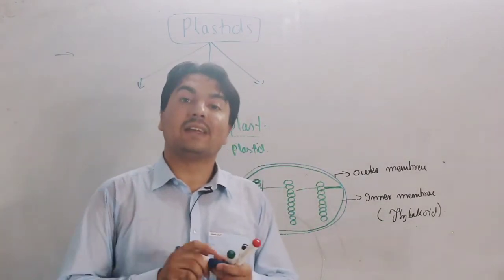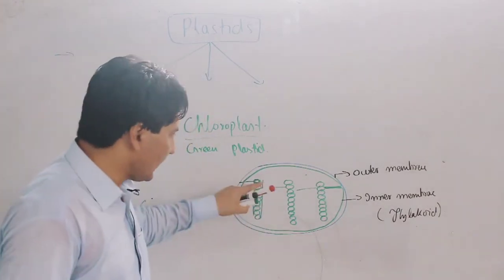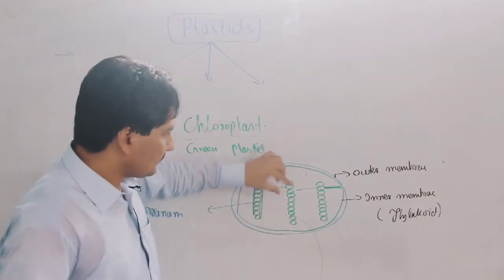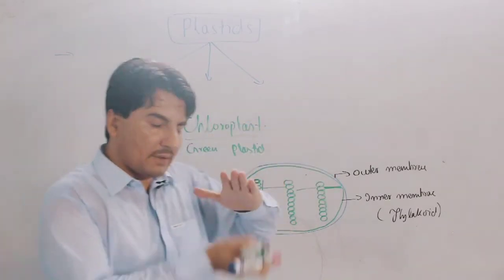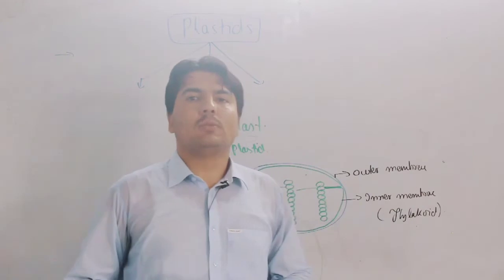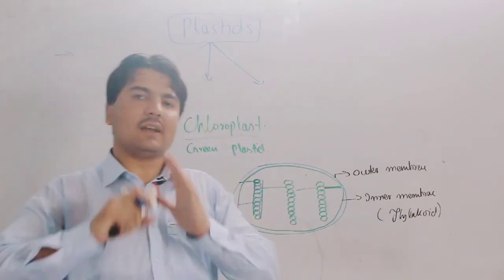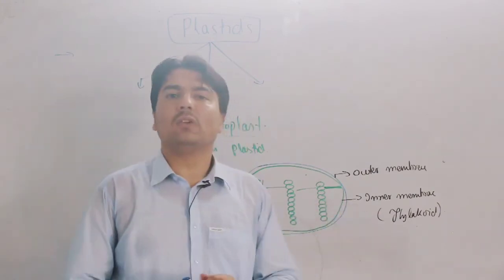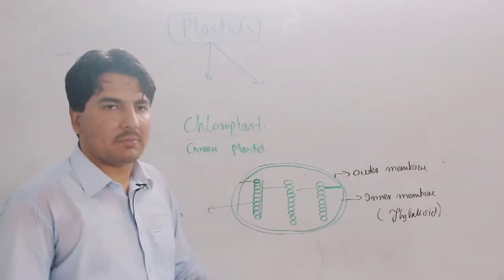The inner membrane is in the form of granum. Thylakoid refers to a single stack, just like coins. When these coins are piled on top of each other, this is called granum. Singular is granum, and the inner membrane forms these grana.